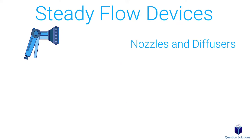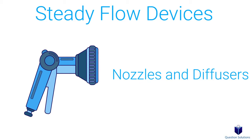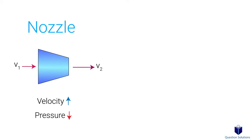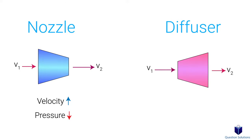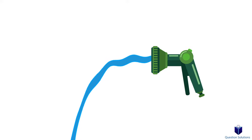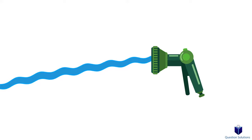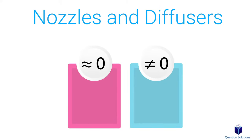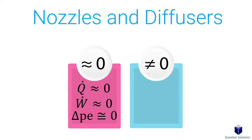In this video, we're looking at just nozzles and diffusers; future videos will cover the rest. A nozzle is a device that increases the velocity of a fluid by reducing the pressure. A diffuser, on the other hand, increases pressure by reducing the velocity. You've probably experienced this with garden hose nozzles, but they're also used in jet engines and rockets. For nozzles and diffusers, heat transfer with the surroundings is so small it's negligible, so q-dot is usually zero. Work and potential energy change are also negligible. However, the fluid tends to experience large changes in velocity, so kinetic energy will not be zero.